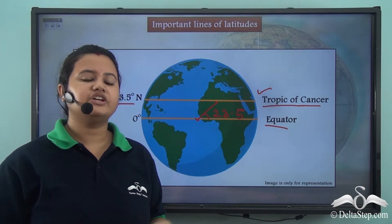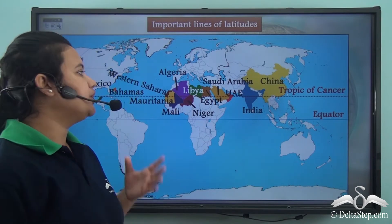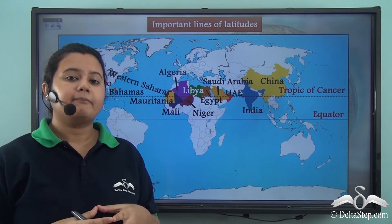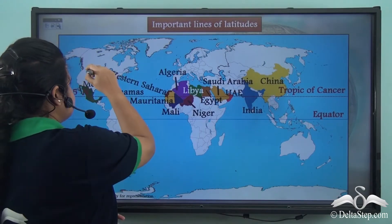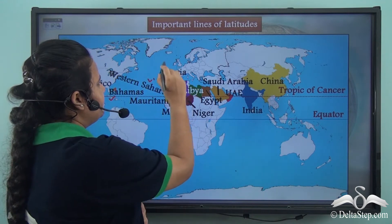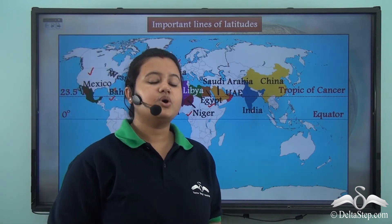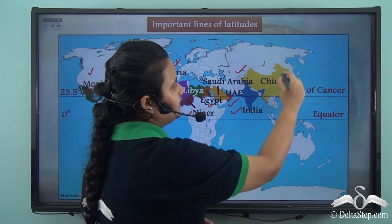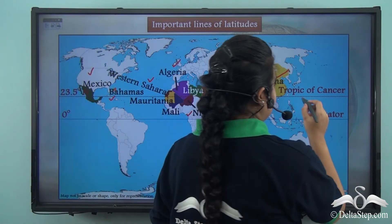The Tropic of Cancer, or twenty-three point five degree north latitude, passes through several countries. As we can see from this map, it passes through Mexico, the Bahamas, and many countries of North Africa like Western Sahara, Algeria, Niger, and Egypt. It also passes through some countries of Asia like Saudi Arabia, UAE, India, and China.